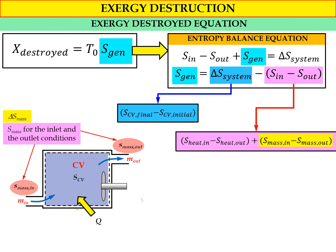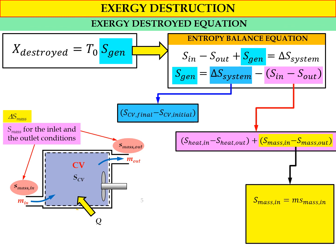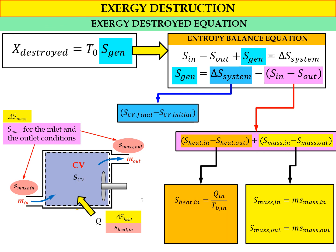The entropy generated also includes contributions from the mass flow rates in and out. For the heat contribution, delta S_heat: S_heat_in equals Q_in divided by T_b_in, and S_heat_out equals Q_out divided by T_b_out, where T_b is the boundary temperature. The direction of in and out depends on the direction of the heat transfer.